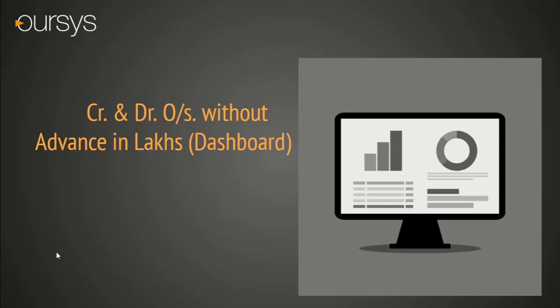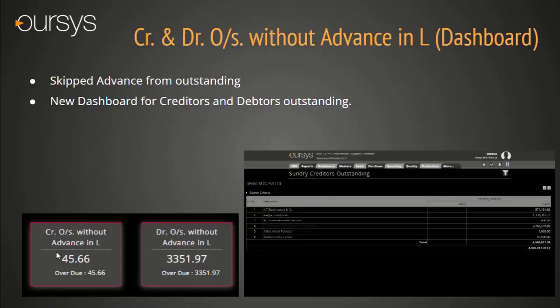New dashboard for Debit and Credit outstanding excluding advance value. It will help accountants to see the exact outstanding amount on the home screen. In this dashboard feature, we have given provision to see the total value in lakhs for this month and also the overdue amount visibility option. Once you click on the value, system will show the detailed report of the debtors and creditors.